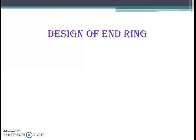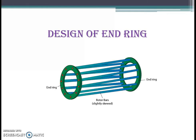Now let us start the design of the end ring. Before we begin, let us review the construction of the rotor end rings. As shown in the figure, we have rotor bars, and all the rotor bars are short-circuited with two end rings at both sides, forming a short-circuited rotor winding.